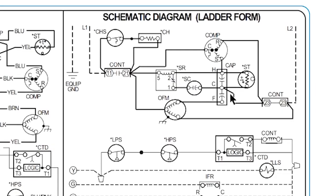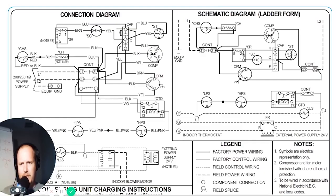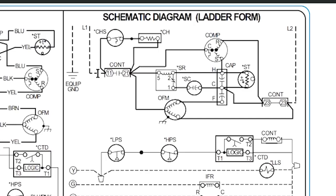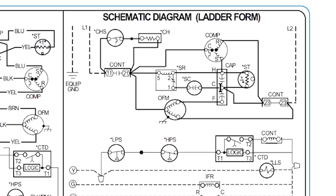On the capacitor, you'll see terminals labeled H, C, and F — on a dual run capacitor, H is HERM (hermetic compressor), C is common, and F is fan. The C terminal on the capacitor is fed from the L2 side of the contactor — the side that feeds run. New technicians get confused because the C on the compressor and the C on the capacitor look the same but mean different things: the compressor's C connects to L1, while the capacitor's C connects to L2.